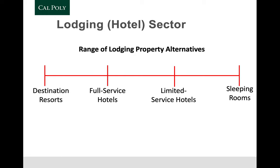Moving down the continuum, we have full service hotels, which include guest rooms, restaurants, meeting space, entertainment, and all the amenities you need. Limited service hotels, on the other hand, such as a Hampton Inn or Fairfield Inn, are more focused on just guest rooms. They may have a nearby restaurant — perhaps a Denny's — but it's usually not run by the hotel itself. Then we have sleeping rooms, which could include something like Airbnb as part of the lodging sector.